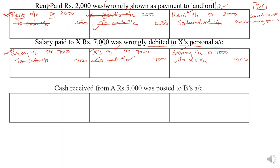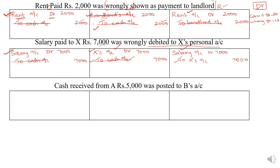Now, if only the credit entry is wrong — look at this example: cash received from A rupees 5,000 was posted to B's account. The correct entry is cash account debit to A's account, rupees 5,000. The wrong entry recorded was cash account debit to B's account, rupees 5,000.